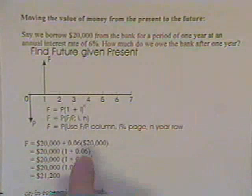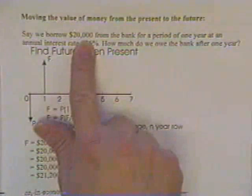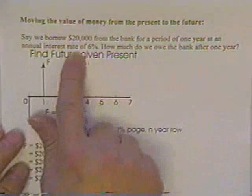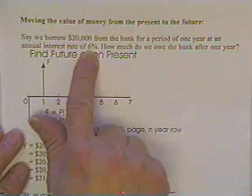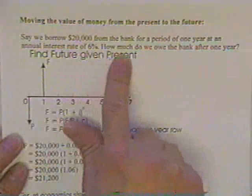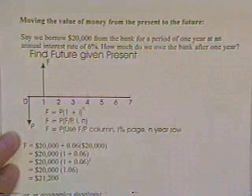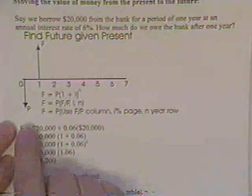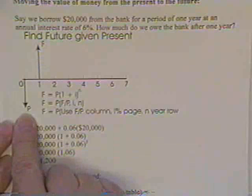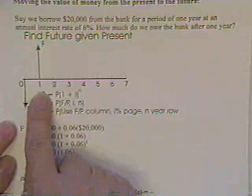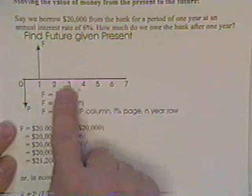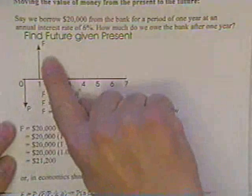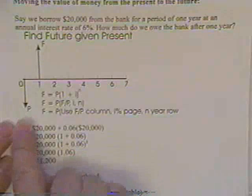Now, let's assume that we have borrowed $20,000 from the bank for a period of one year. They are requiring us to pay an interest rate compounded at the end of each year of 6%. The question is, how much do we owe the bank after one year? Normally, a cash flow diagram is a valuable thing to draw. You'll notice here, we took money out of the bank, and one year later, we put money back into the bank.